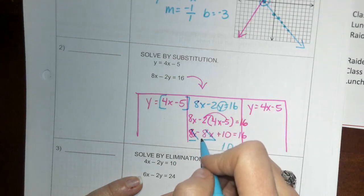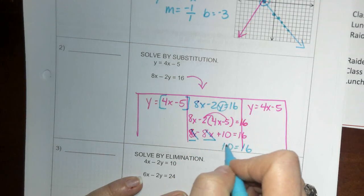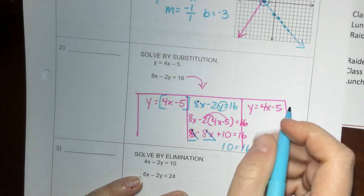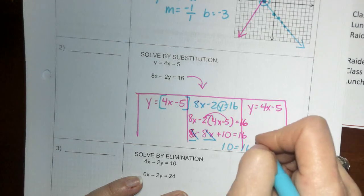Okay, yep, okay. So we have 8x, those cancel out.